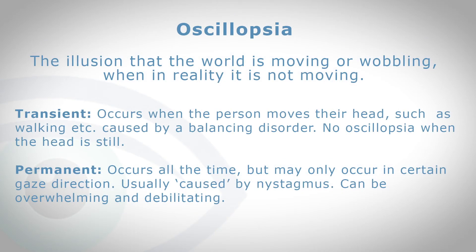So let's look at oscillopsia. This is the illusion that the world is moving or wobbling when in reality it is not. Oscillopsia can be a transient phenomenon occurring when people move their head, such as when walking — this is caused by a vestibular disorder, and when the head is kept still there usually is no oscillopsia. People with nystagmus tend to have a permanent type of oscillopsia; it occurs all the time or as long as the nystagmus is occurring, and it may occur in certain gaze directions.